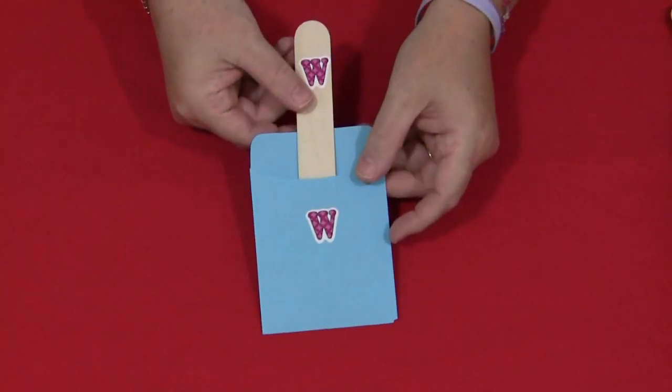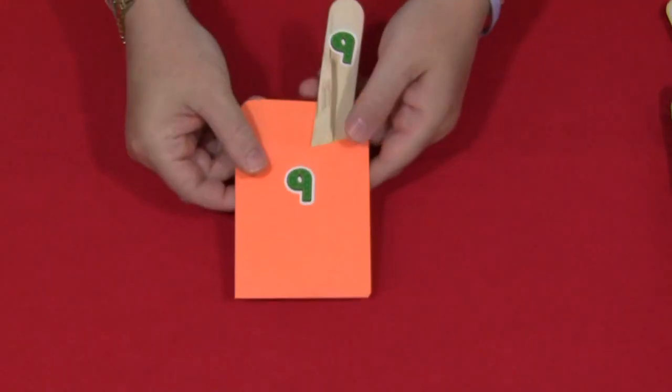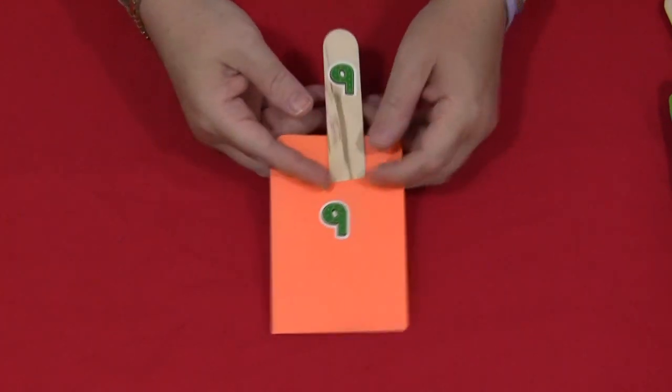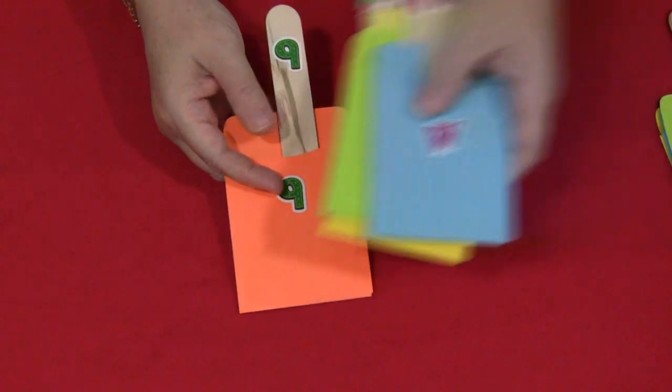You could also buy alphabet stickers and make letter matching and even numbers too and match those. So there's a whole bunch of stuff you can do with the craft sticks and the library pockets. You could do sight word matching.